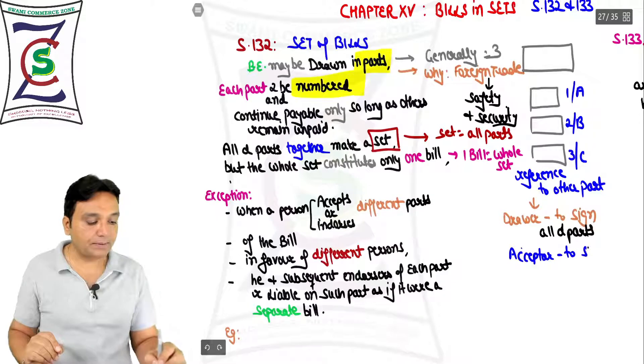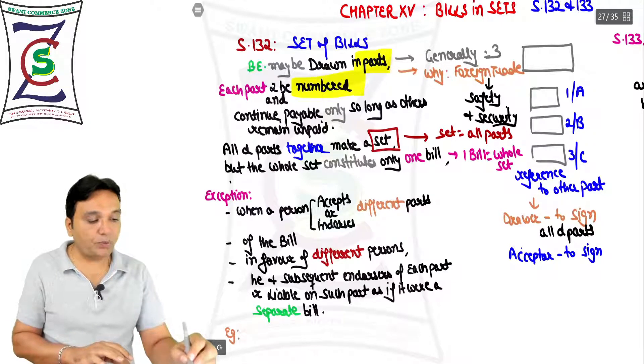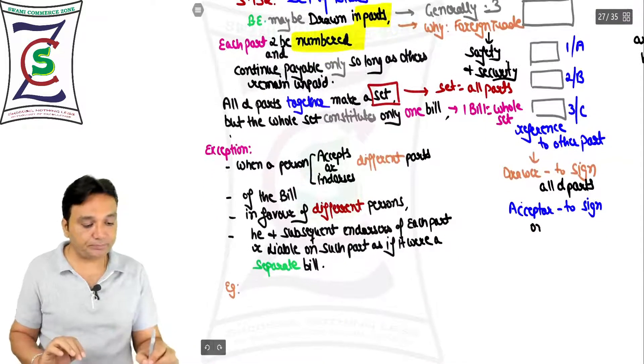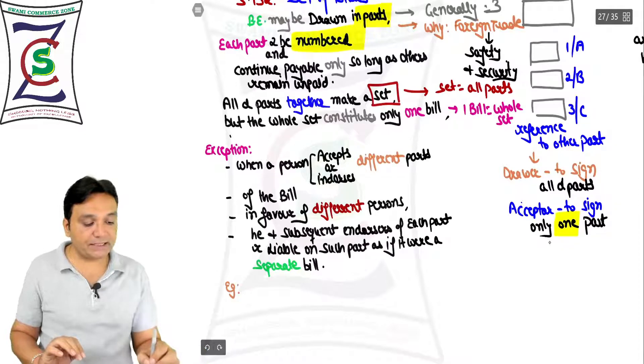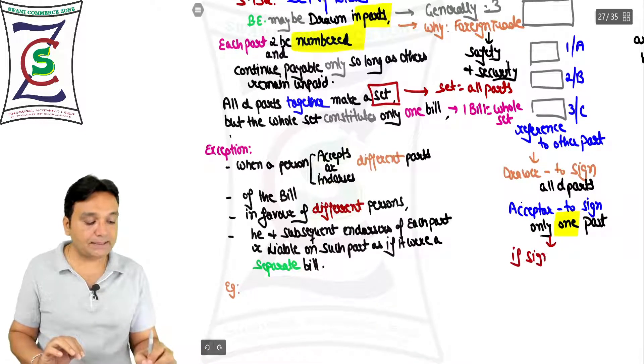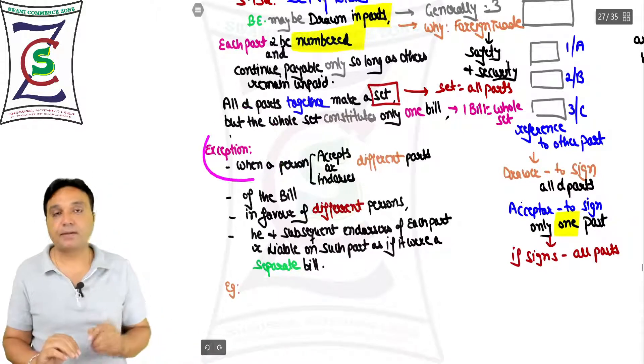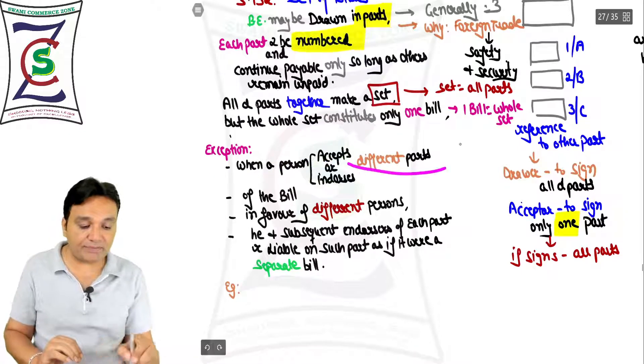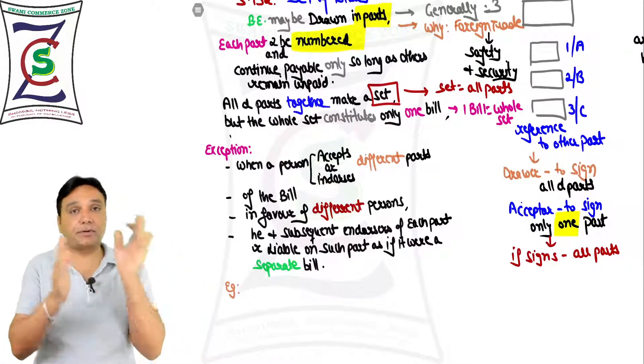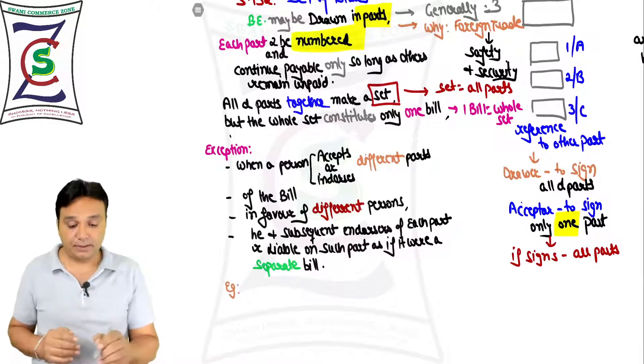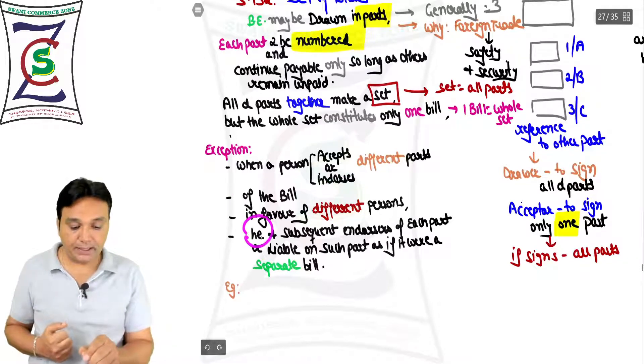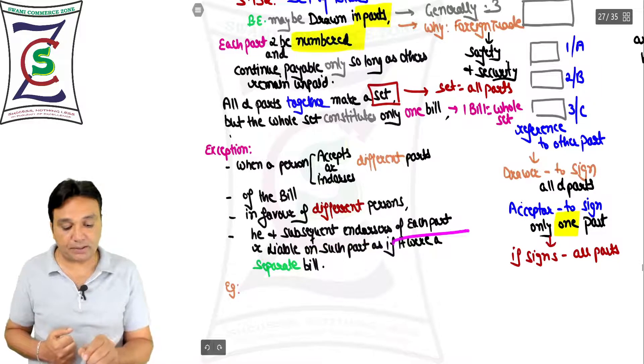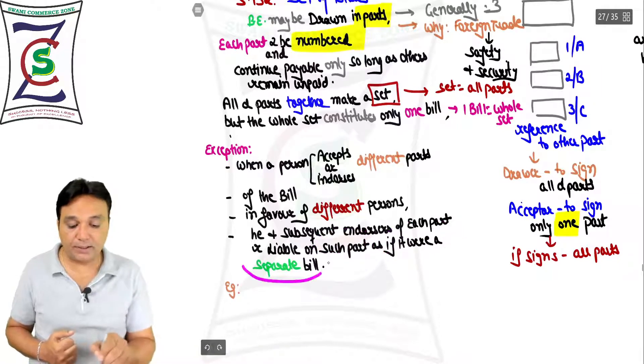But the drawee becomes liable only when he puts the signature - that is, he accepts. So the acceptor signs which part? Only one part, not all the parts. Only one part. If he signs all parts, then here comes the exception.